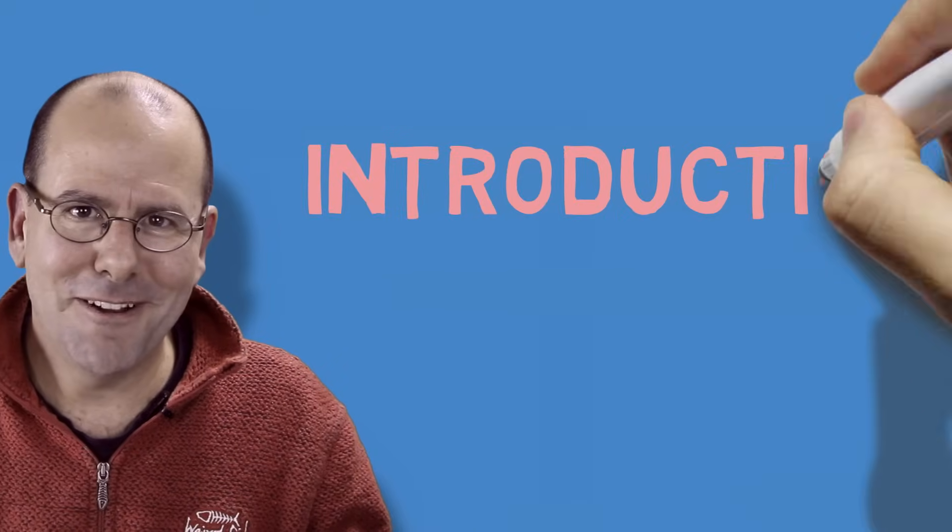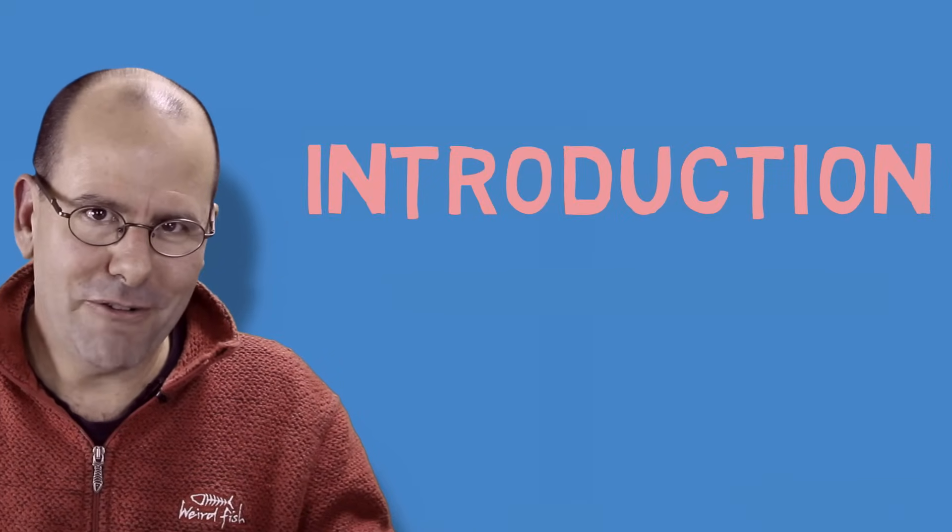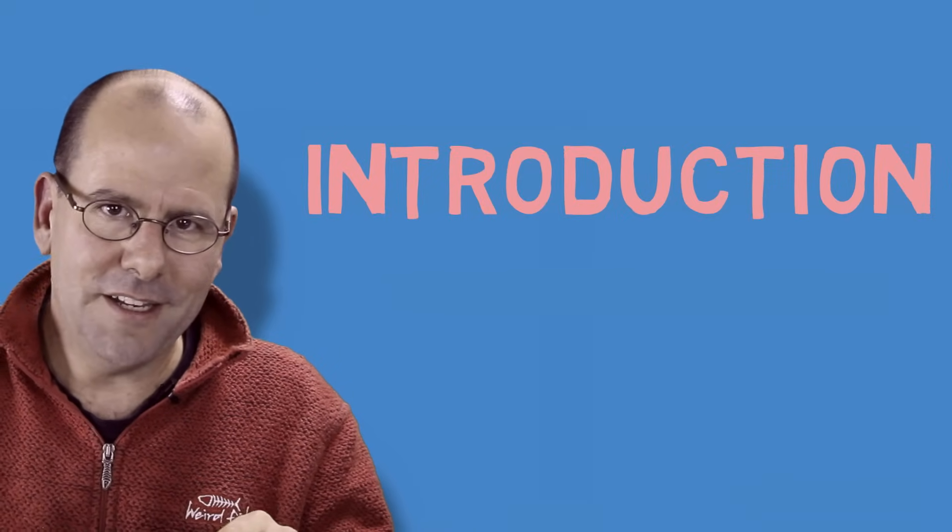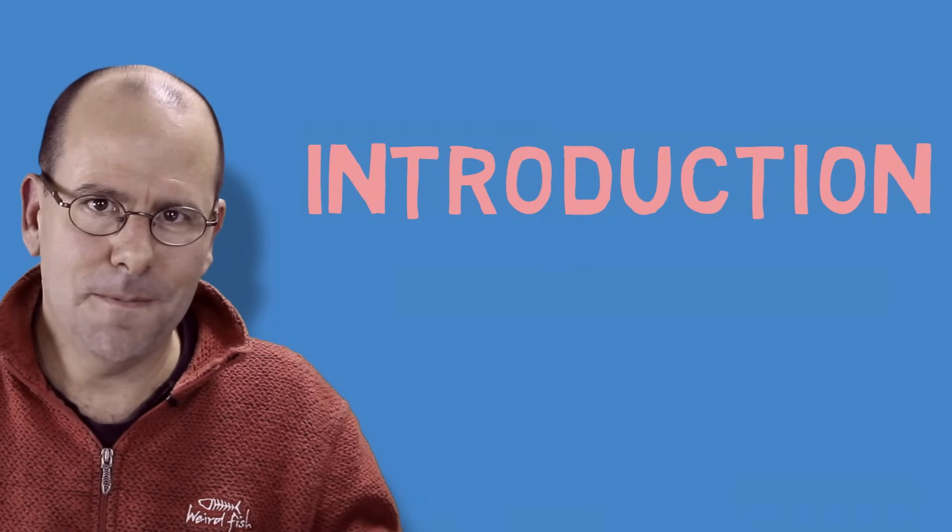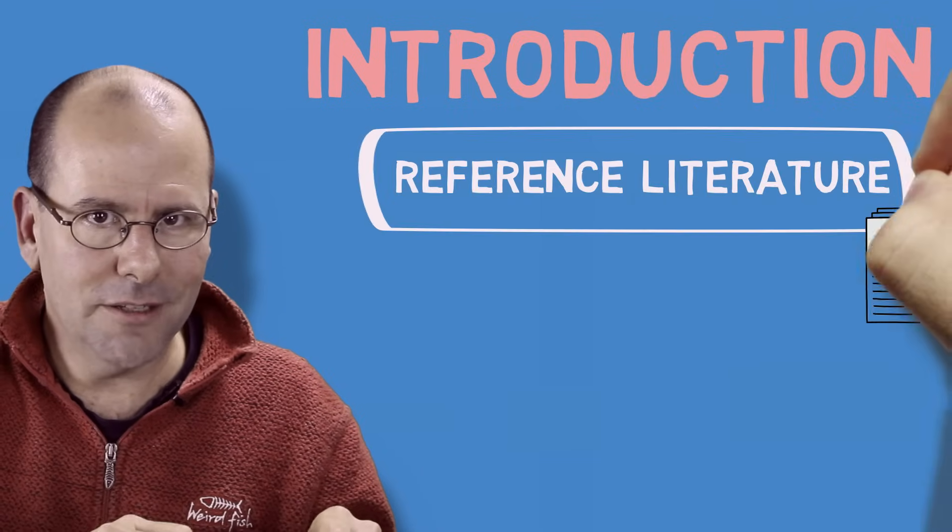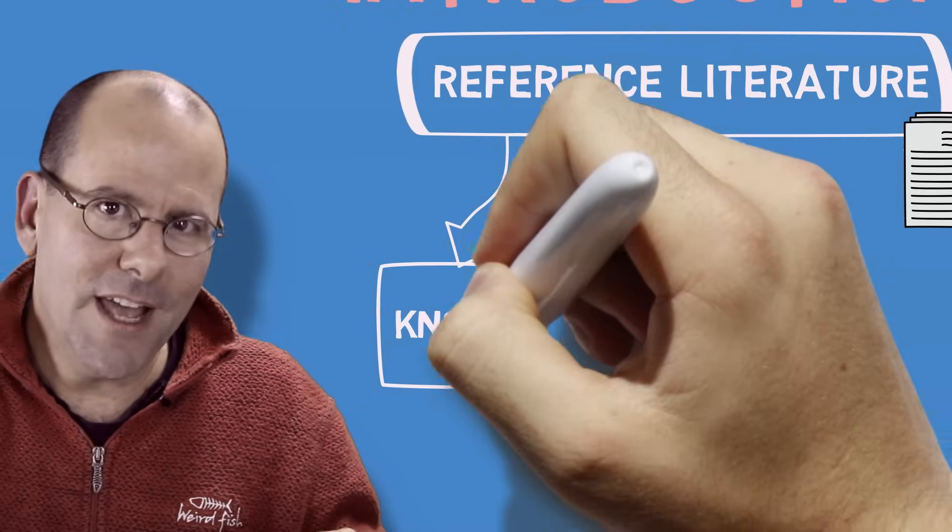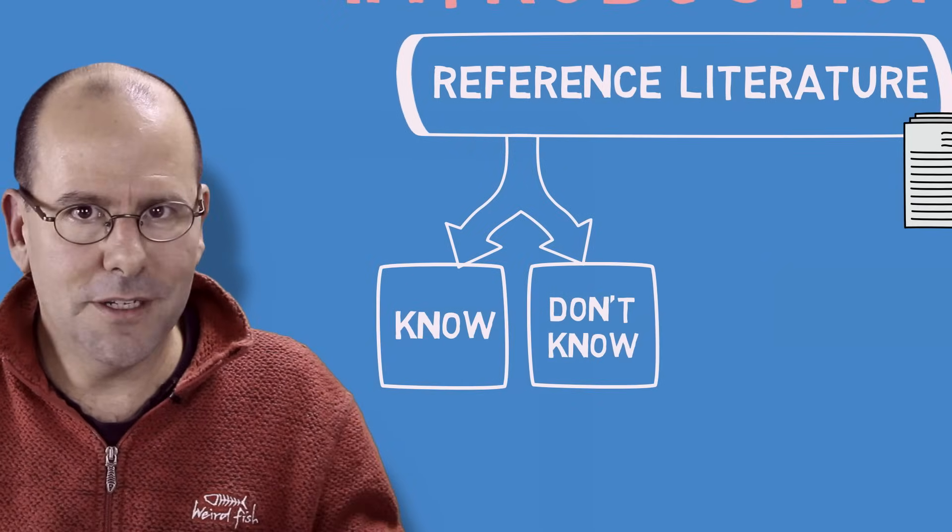Now let's talk about the introduction and background. When you write the introduction and background, what you want to get out of this is you want the reader to keep reading. To do that, what you want to do is provide context. In other words, with reference to existing literature, you're going to tell them what we know and what we don't know in this particular subject area.